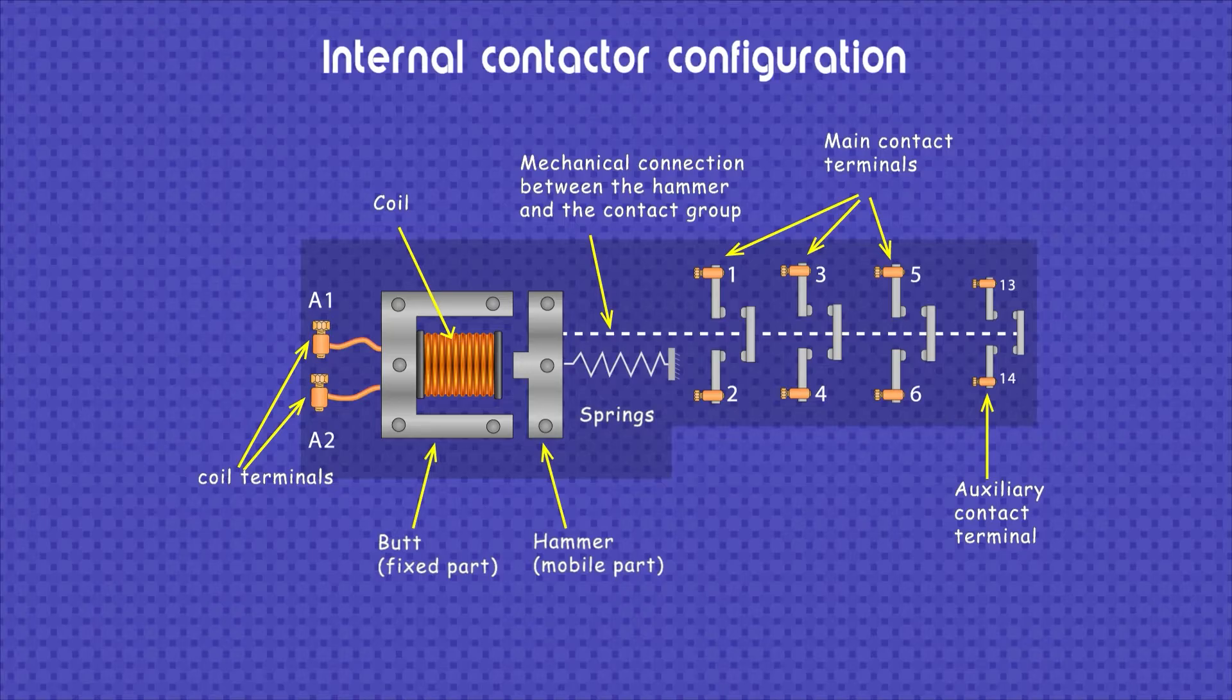The mechanical connection is the rigid element that joins the contacts to the moving part, here it is specified with dotted lines. The spring is the element that allows the stock to be separated from the hammer when the coil is de-energized. On the left side we have the terminals that connect to the coil and on the other side we have the main and auxiliary contacts of the contactor.